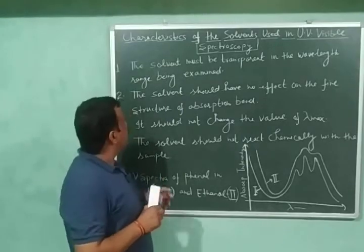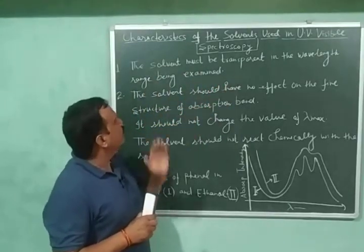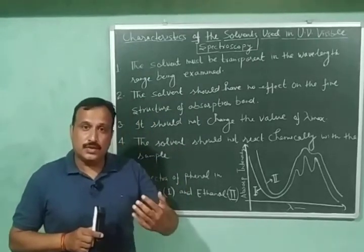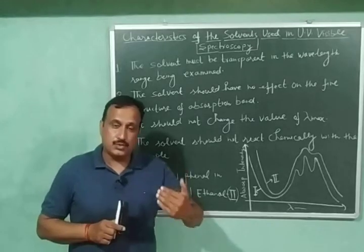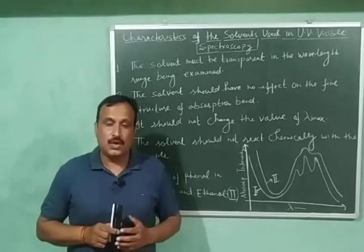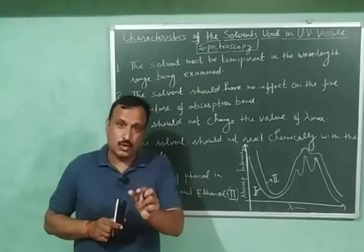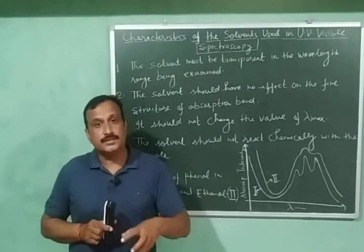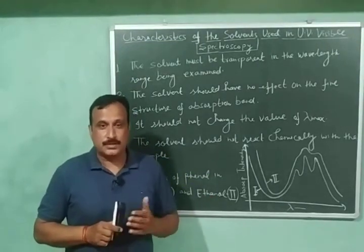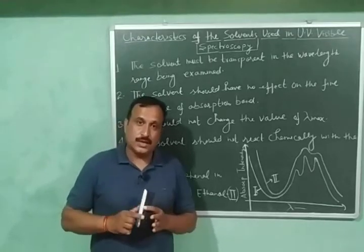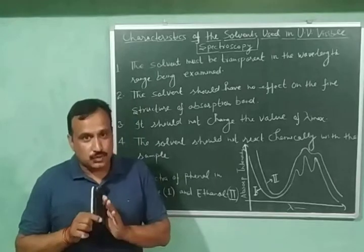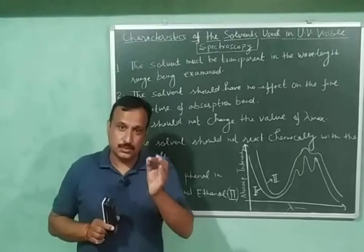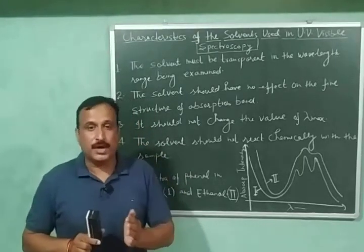So let us discuss the first characteristic of a good solvent. And the first characteristic is the solvent must be transparent in the wavelength range being examined. What does it mean? It means that our solvent should not absorb UV visible radiations in the range in which our sample is absorbing.